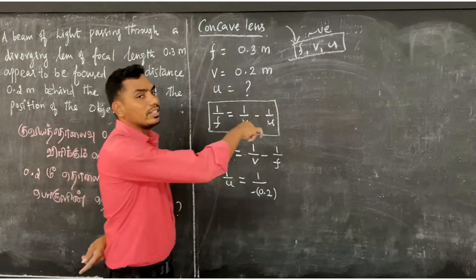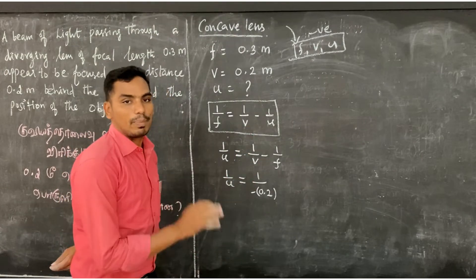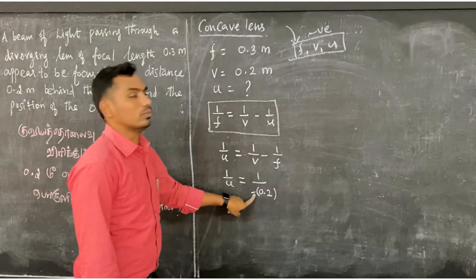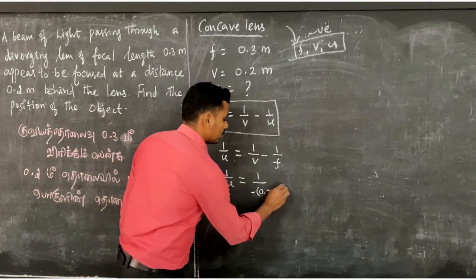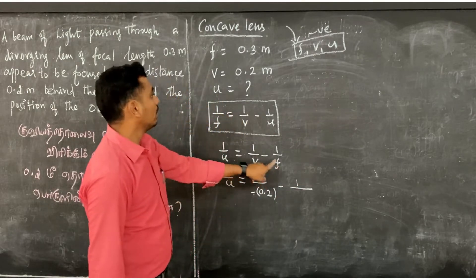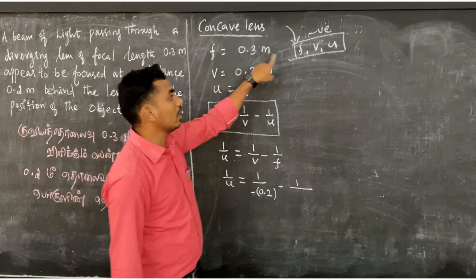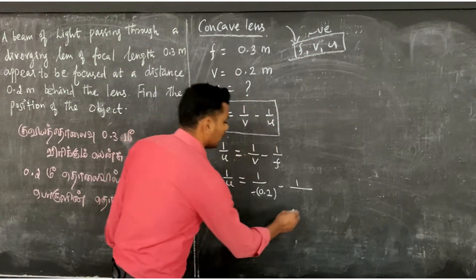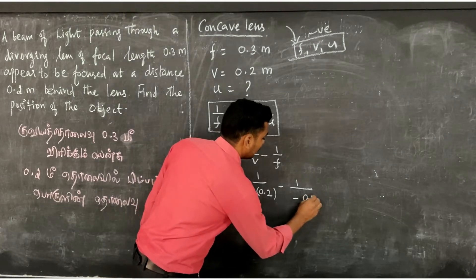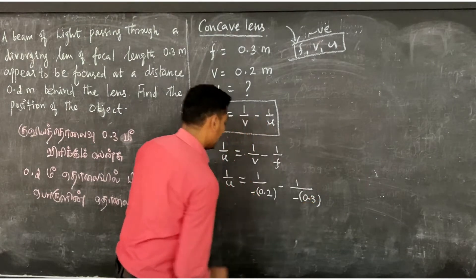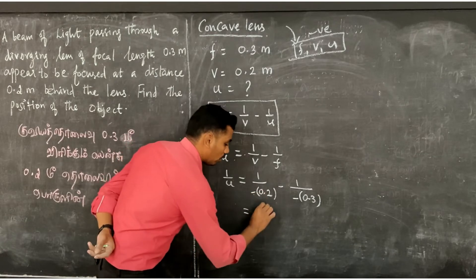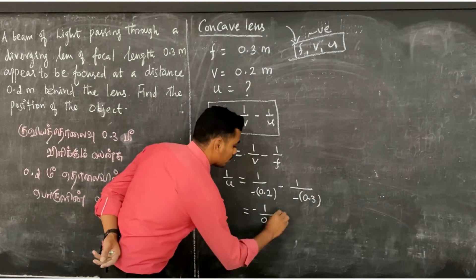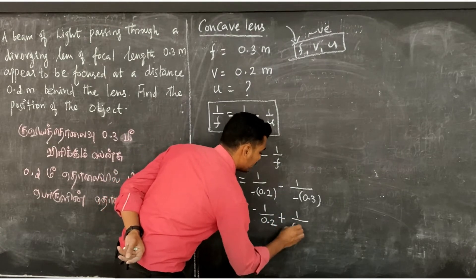Why do we apply Cartesian sign convention? In Cartesian sign, F, V, and U — all values get their appropriate signs. Minus 1 divided by F, where F is 0.3 meter. In Cartesian sign, F is put out as negative: F equals minus 0.3. So in the equation: 1 by F gives minus 1 by 0.2, minus minus plus 1 by 0.3.